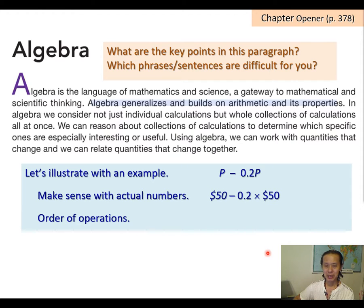We know that we need to multiply before subtracting. So 0.2 times $50 is $10. And then after that, we do the subtraction and we'll get an answer of $40.